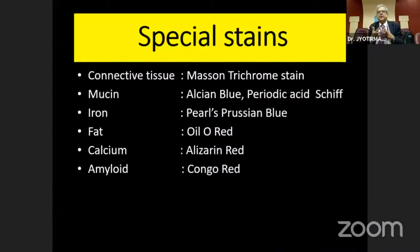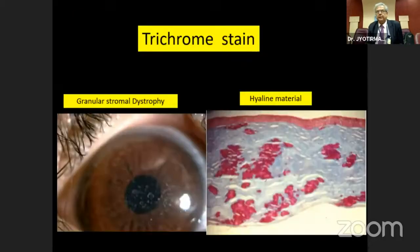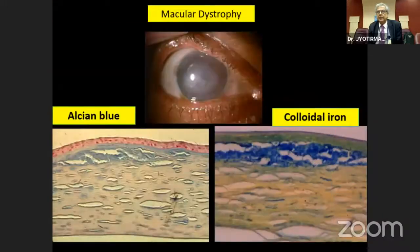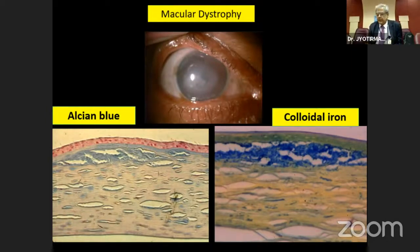For special stains, we use: connective tissue — Masson's trichrome stain; acid mucopolysaccharides — alcian blue; PAS stain; iron — Perls' Prussian blue; fat — oil red O; calcium — alizarin red; and amyloid — Congo red. For example, in granular stromal dystrophy, hyaline material stains red against a blue background, confirming hyaline dystrophy. In macular dystrophy, acid mucopolysaccharides stain blue with alcian blue or colloidal iron.